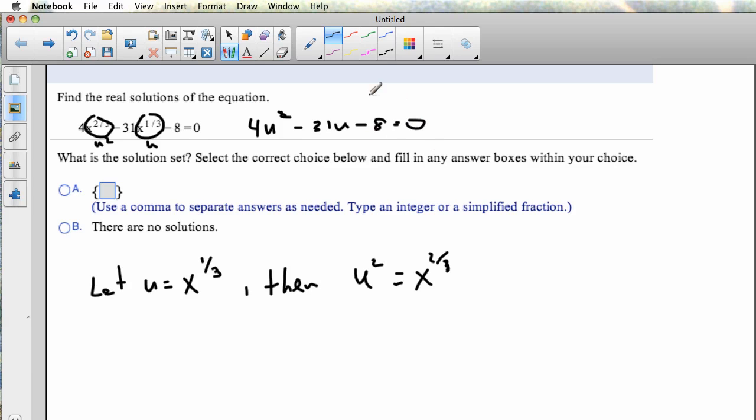And so this is a quadratic, and it already has the equal 0 on that side. So I can try factoring. Factoring is always good if it works.